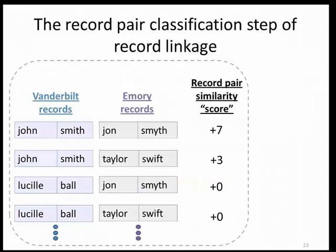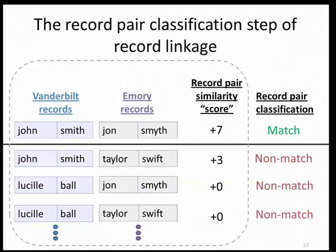In the classification step, you draw a classifying line and say record pairs more similar than this we'll call matches, and record pairs less similar we'll call non-matches. The expectation maximization algorithm can provide an estimate of the proportion of record pairs that are true matches. For example, if you run the EM algorithm on four record pairs and it says 25 percent are true matches, you know to draw the line at the top record pair and only call that one a match. In the experiments I'll show, this is also how we draw the classifying line.